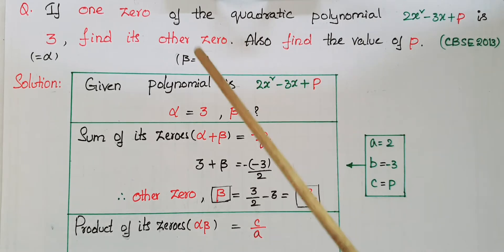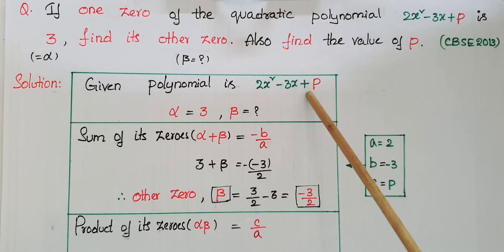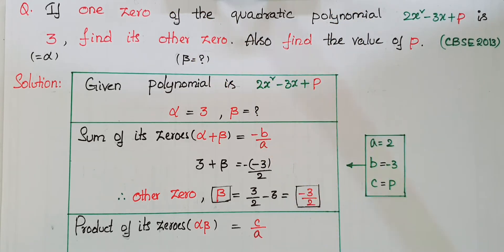The quadratic polynomial given is 2x² - 3x + p. The constant c, that is p, is not given, so we have to find p. One zero is given, that is 3, so α = 3. We have to find its other zero, that is β.